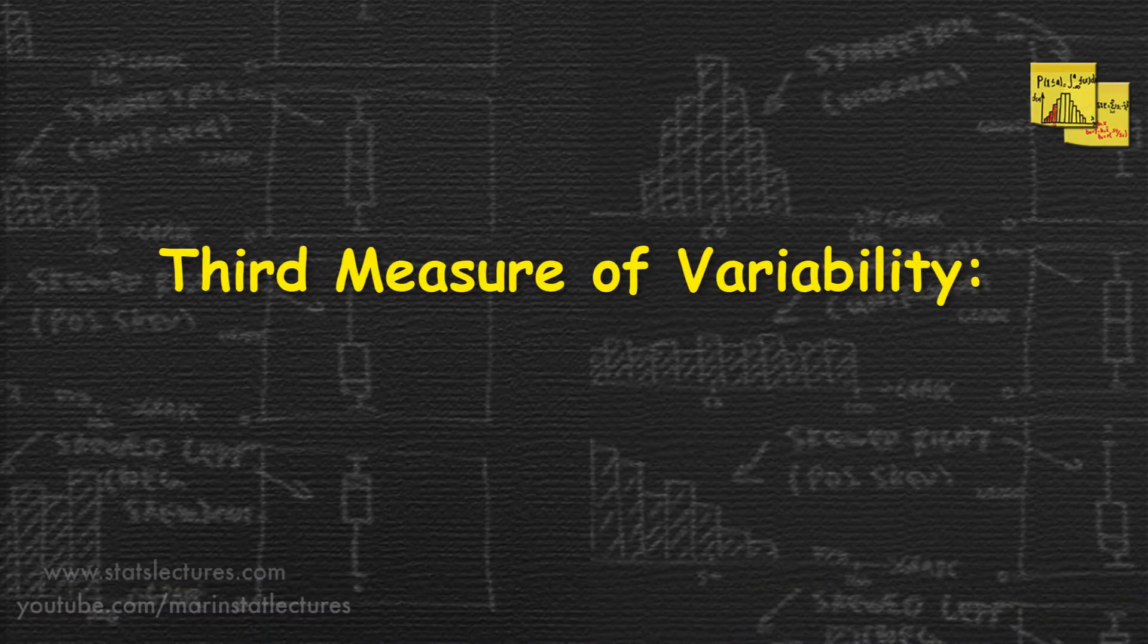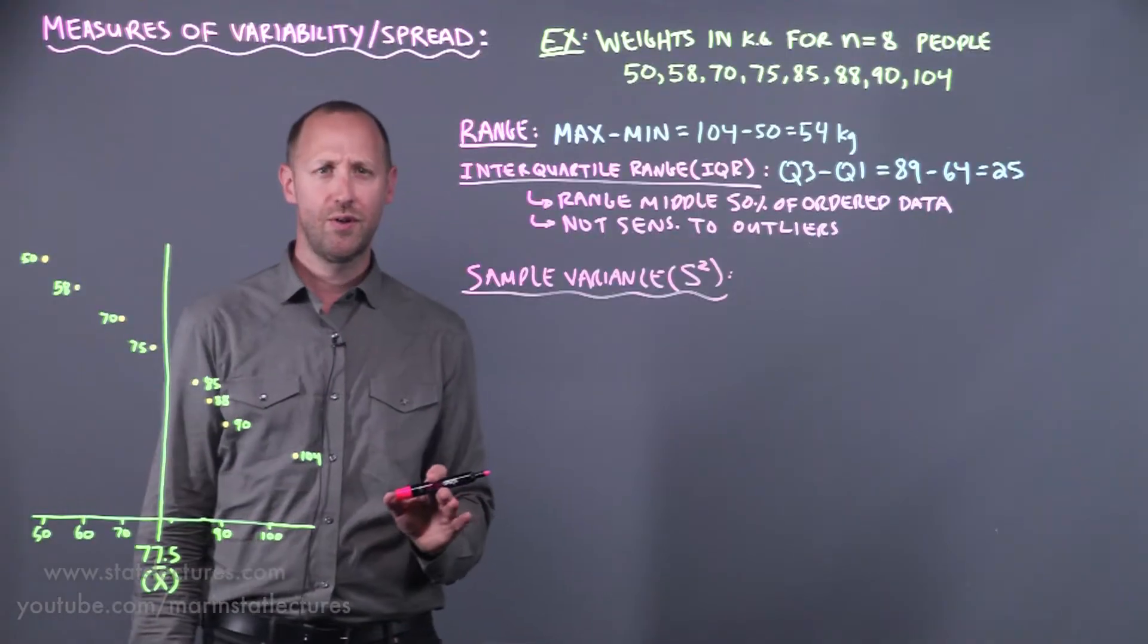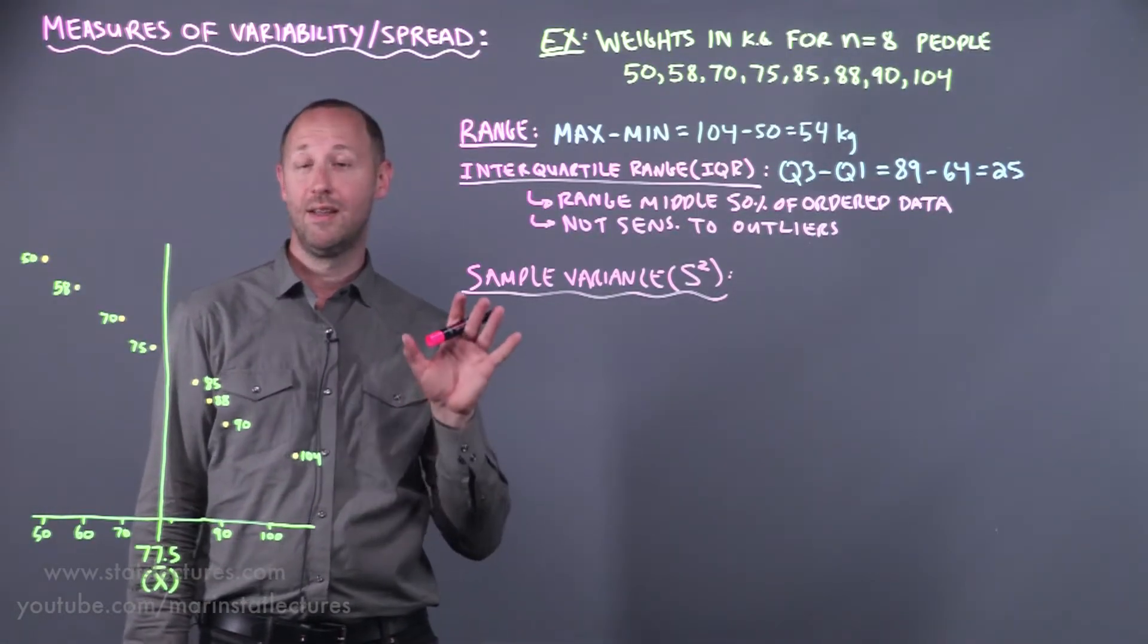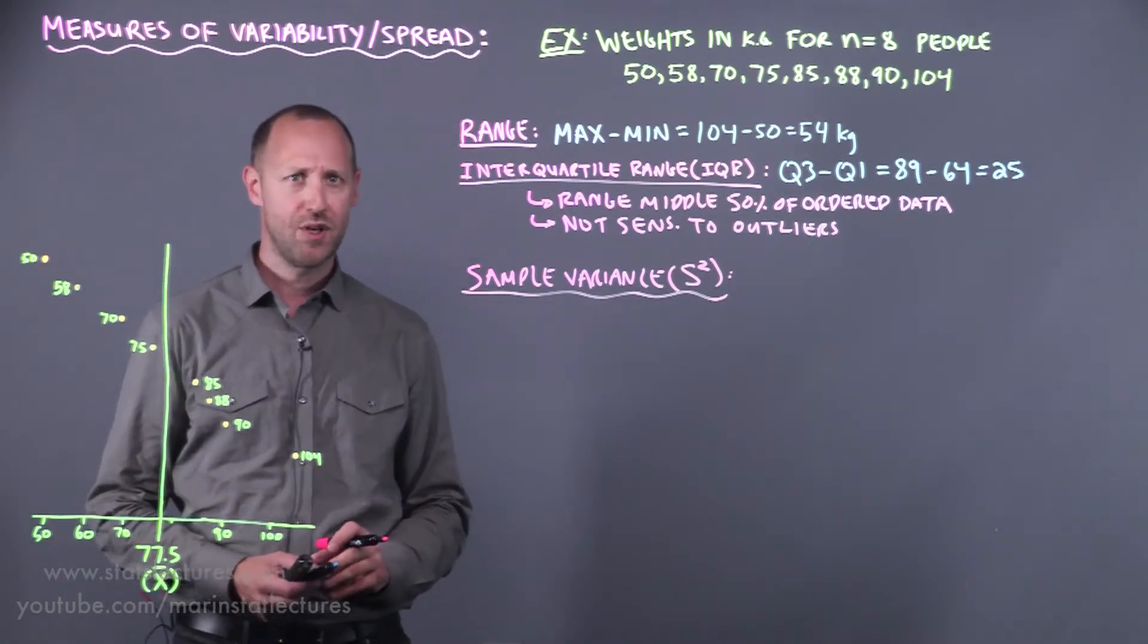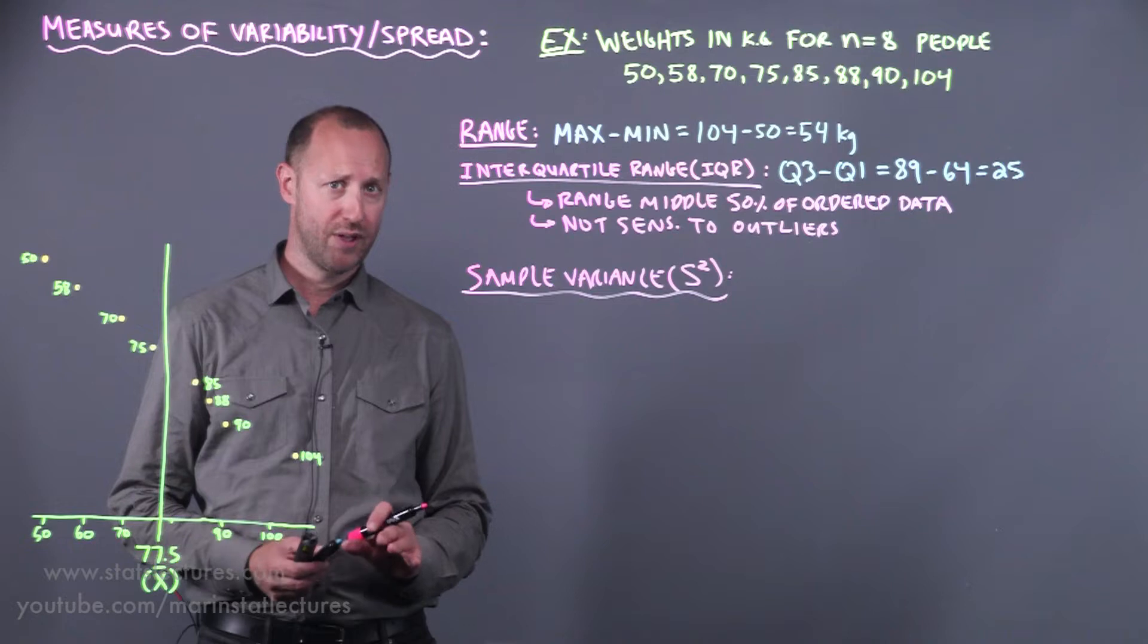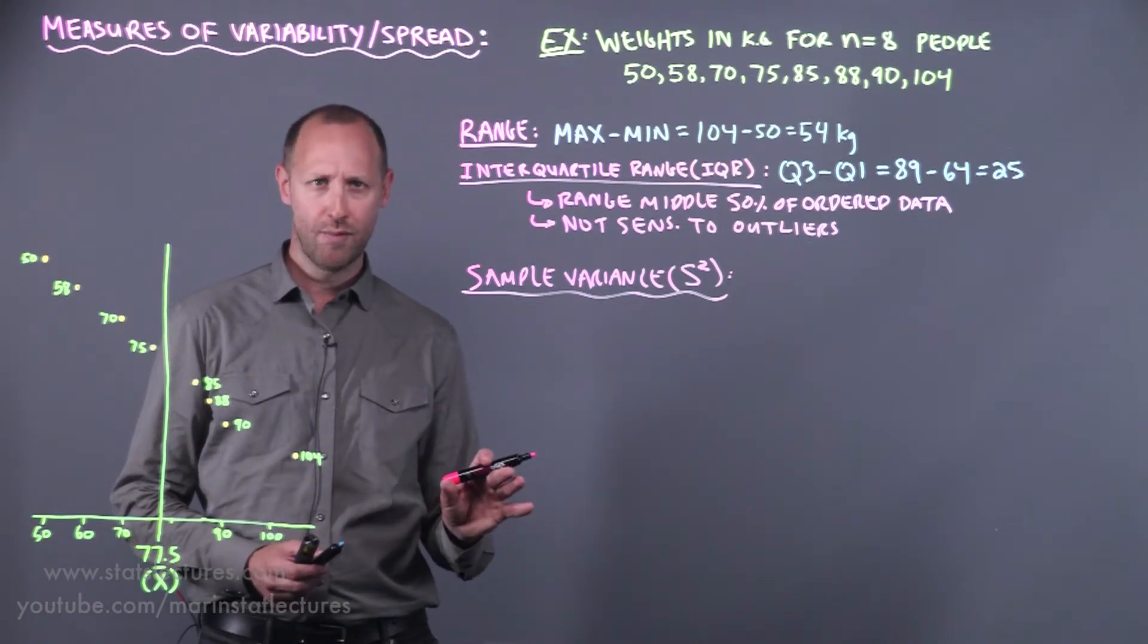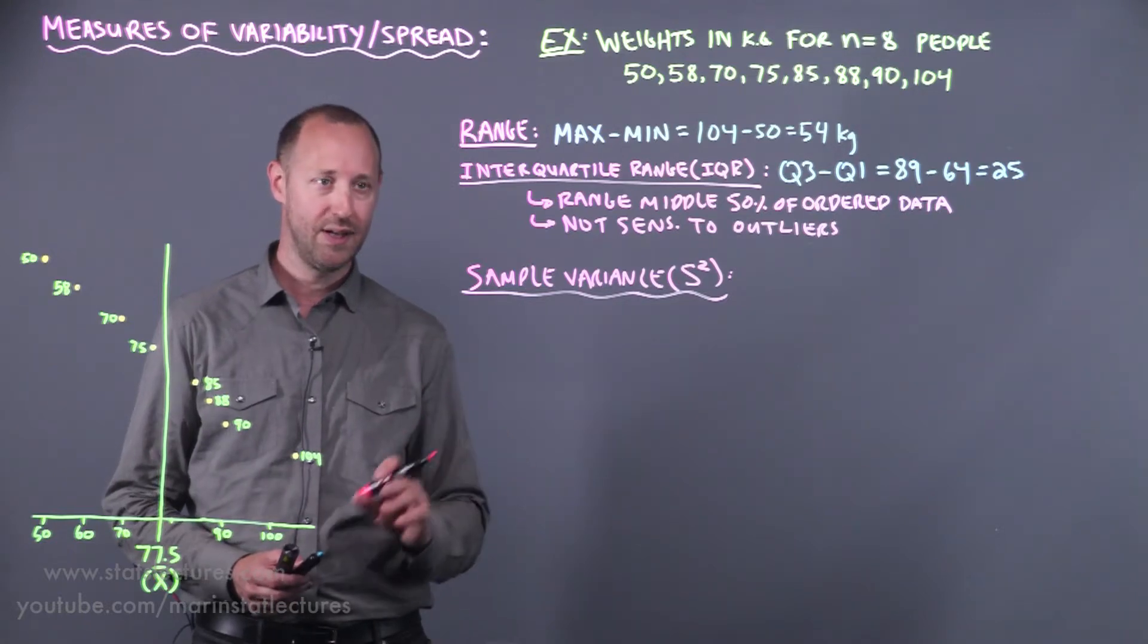The next measure of variability is the sample variance. With notation we write that as little s squared. We have a separate video that goes into detail explaining the sample variance as well as sample standard deviation and building up those concepts in much more detail. Here we're going to introduce the concept and show the formula.